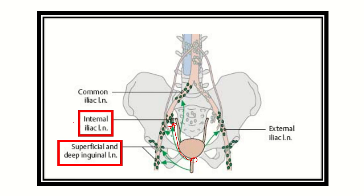Here we can see the lymphatic drainage of the membranous part drains into the internal iliac group of lymph nodes. The membranous part and prostatic part are both drained into the internal iliac group of lymph nodes. On the other hand, the penile part of the urethra is drained into the superficial and deep inguinal lymph nodes.